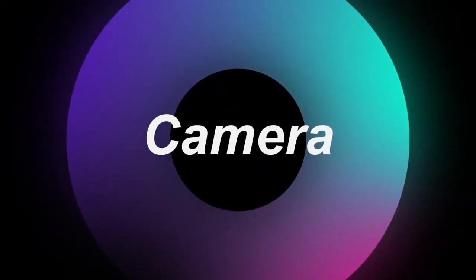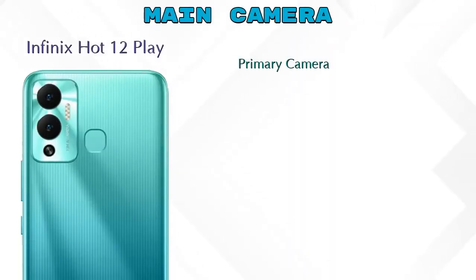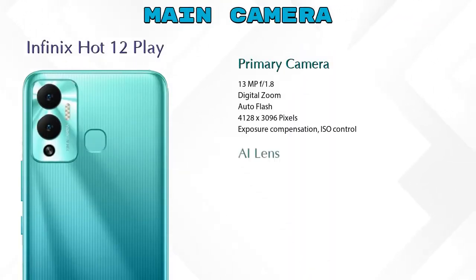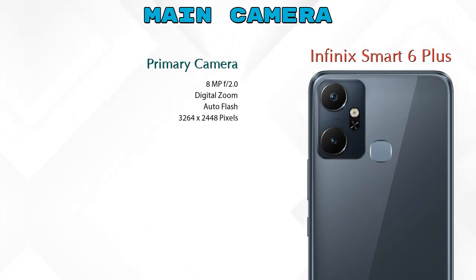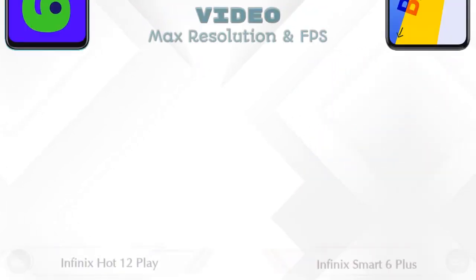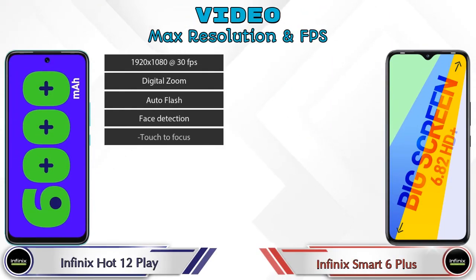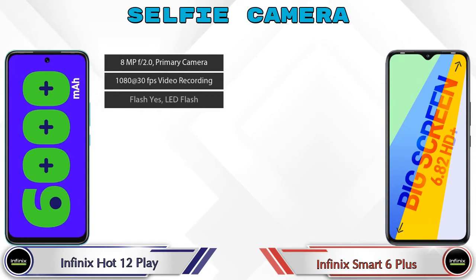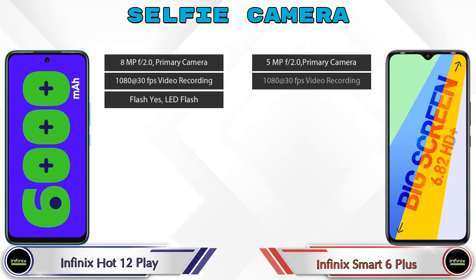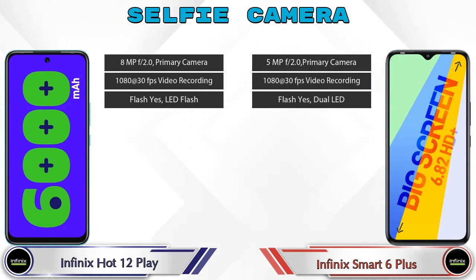Let's see the complete details about our favorite feature — the camera. For the rear camera, Hot 12 Play has two cameras: a primary camera and an AI lens. Smart 6 Plus has one camera, which is the primary camera. For video camera, Hot 12 Play has 7 and Smart 6 Plus has 4 different types of features available. For the front selfie camera, both phones have a single camera with 3 different features available.